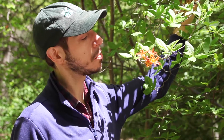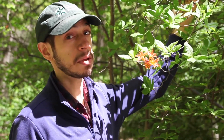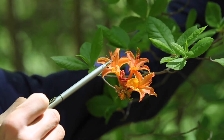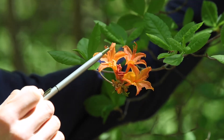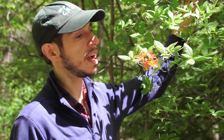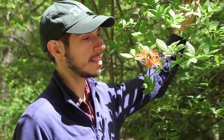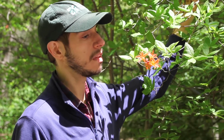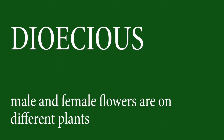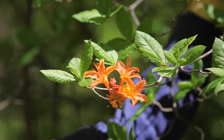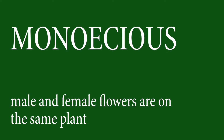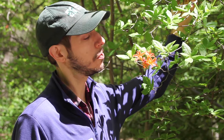A flower contains all the reproductive parts of a plant. Flowers can be both complete, as in the example of this flame azalea having male and female parts on the same flower, or they can be incomplete, where the male and female portions would be on separate flowers. Plants that have only male or only female parts on separate flowers are referred to as dioecious, while a plant that has both parts — or only male and only female flowers — on the same plant is referred to as monoecious. Who knew flowers were so complex?